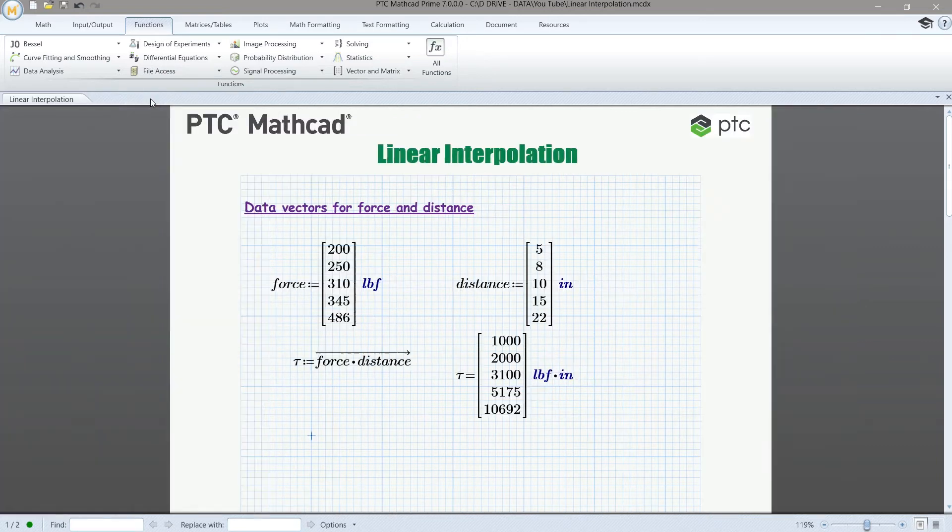So we don't need this here. Let's go ahead and type L-I-N-T-E-R-P, linterp, and it has three inputs. So we're going to open the parentheses and give it the inputs in a comma-separated list. So the first input is going to be our x-data. So our x-data is force.